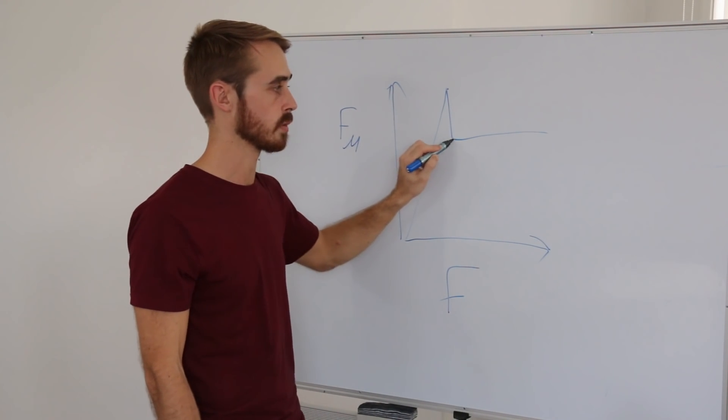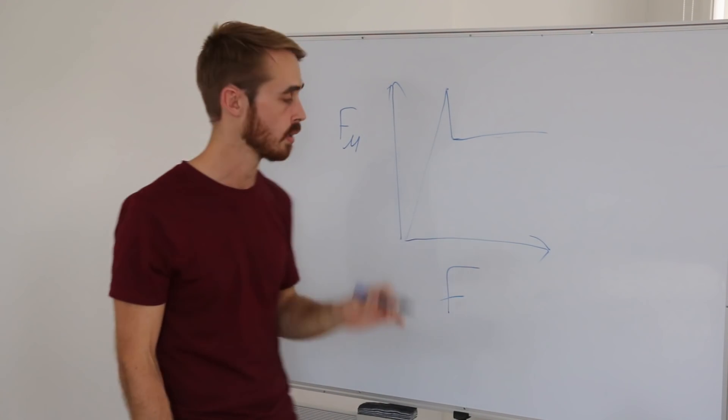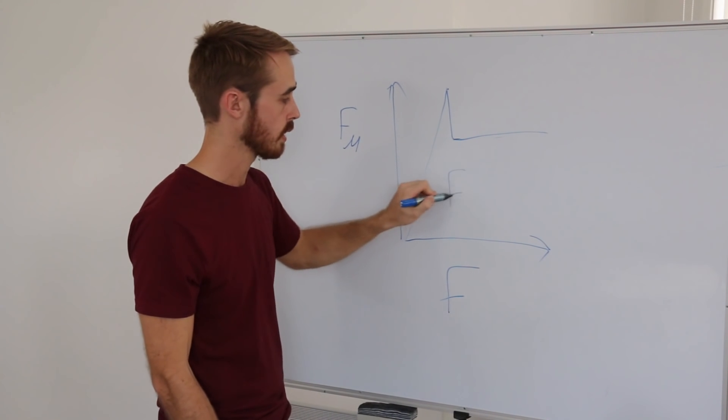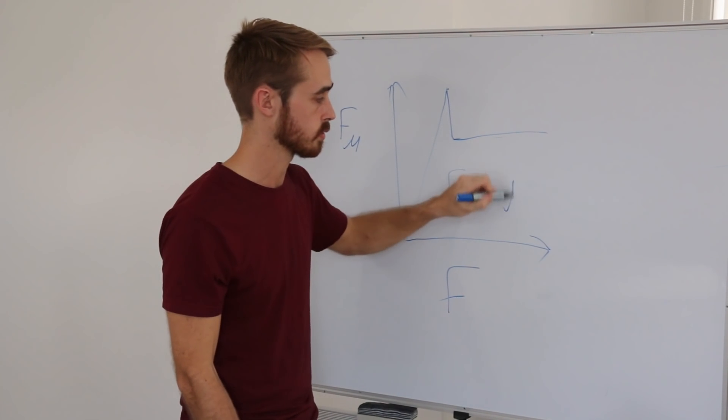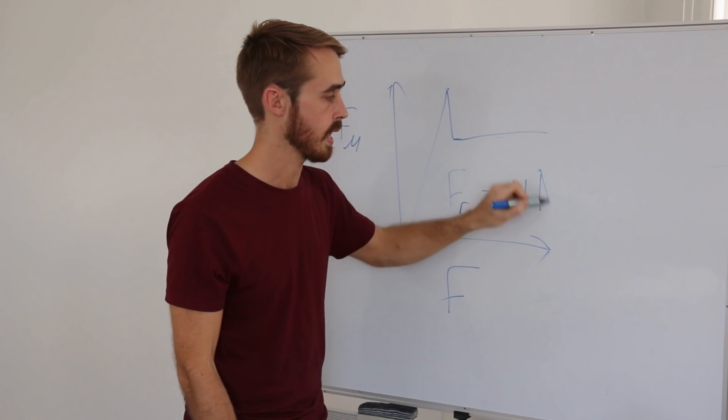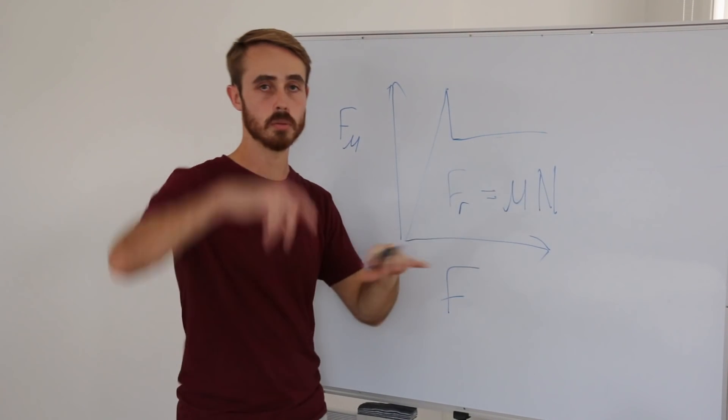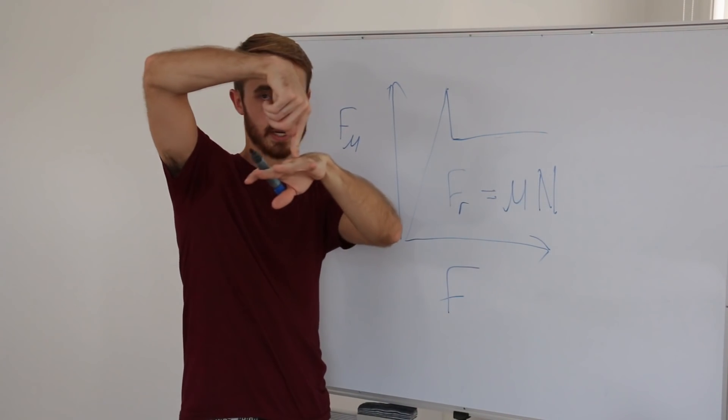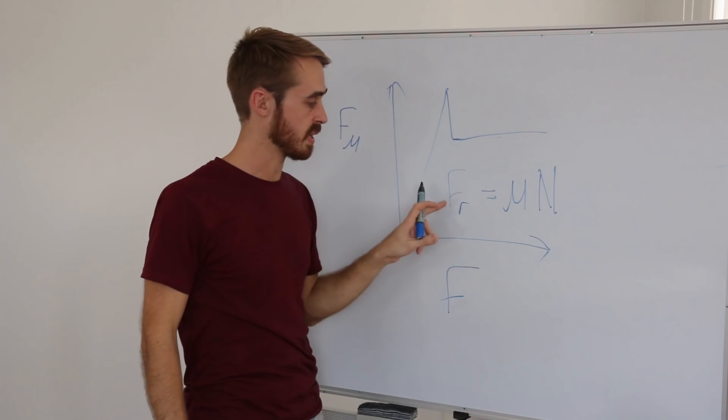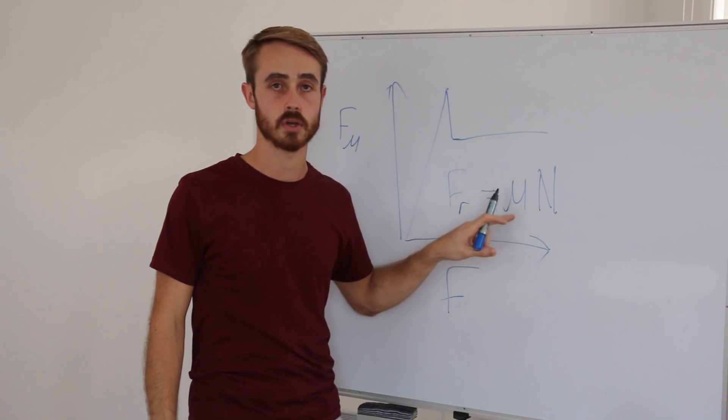Then, the frictional force will drop down to a certain point and continue. This can be seen in the equation Fr equals mu N. This being the normal force on an object, and this being the frictional force, where this is the coefficient of friction.